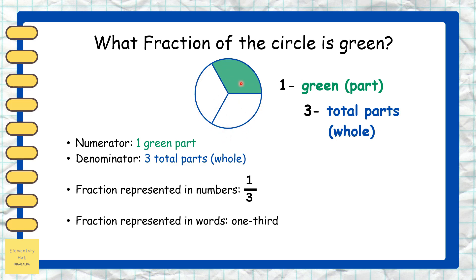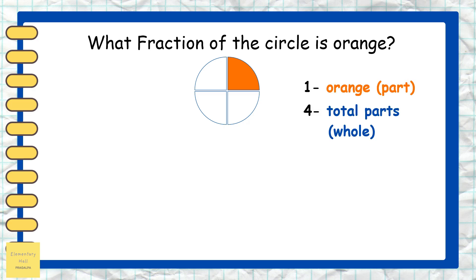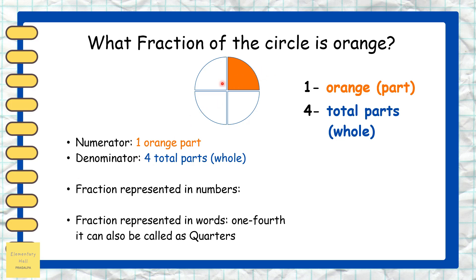What fraction of the circle is orange? This circle has one orange part and four total parts. The numerator is one orange part, and the denominator is four total parts. The fraction represented in numbers is one by four, and in words it is one-fourth.